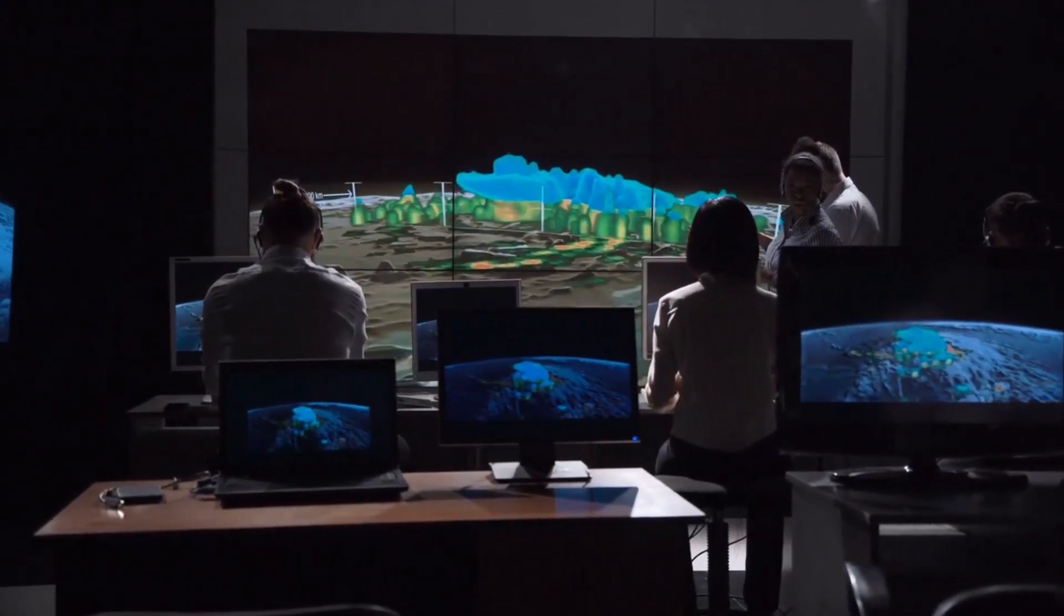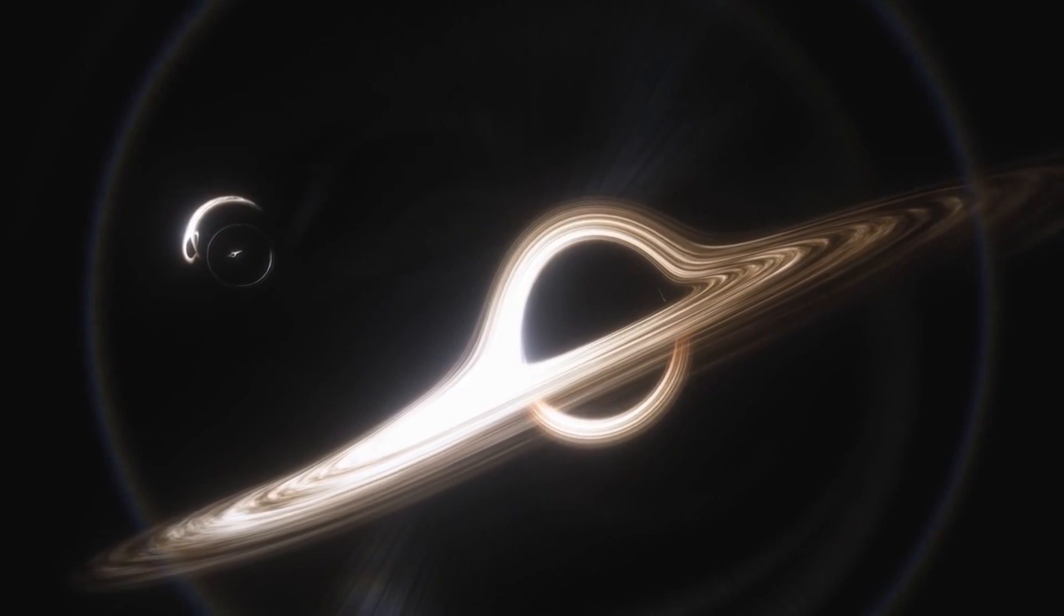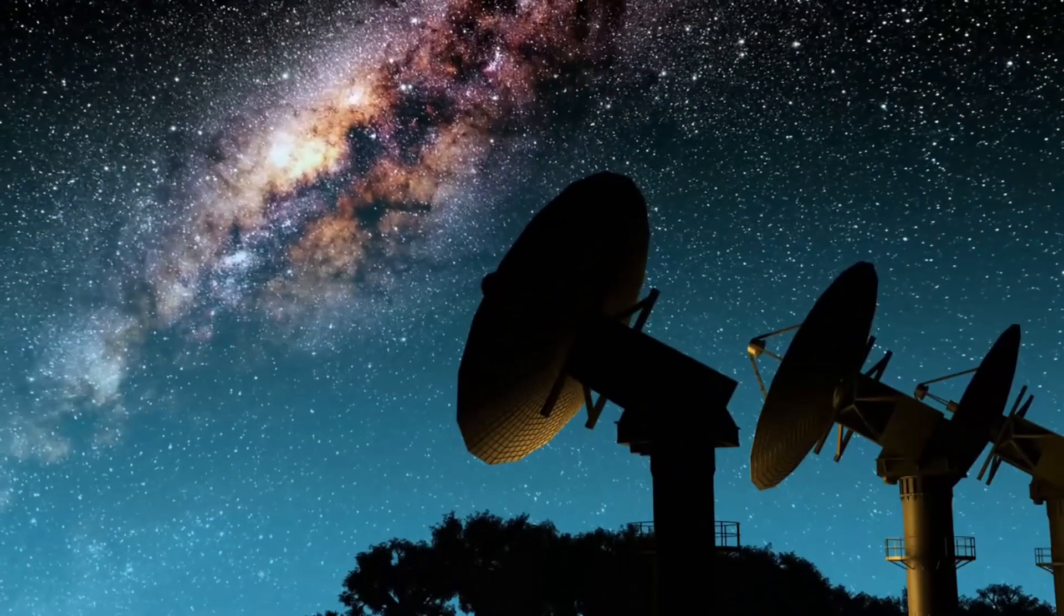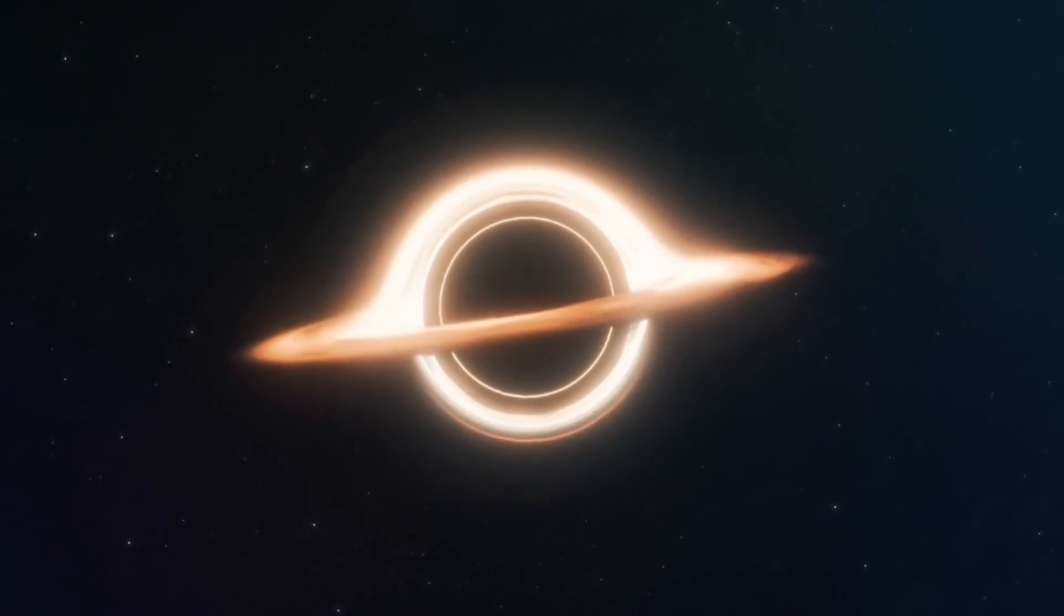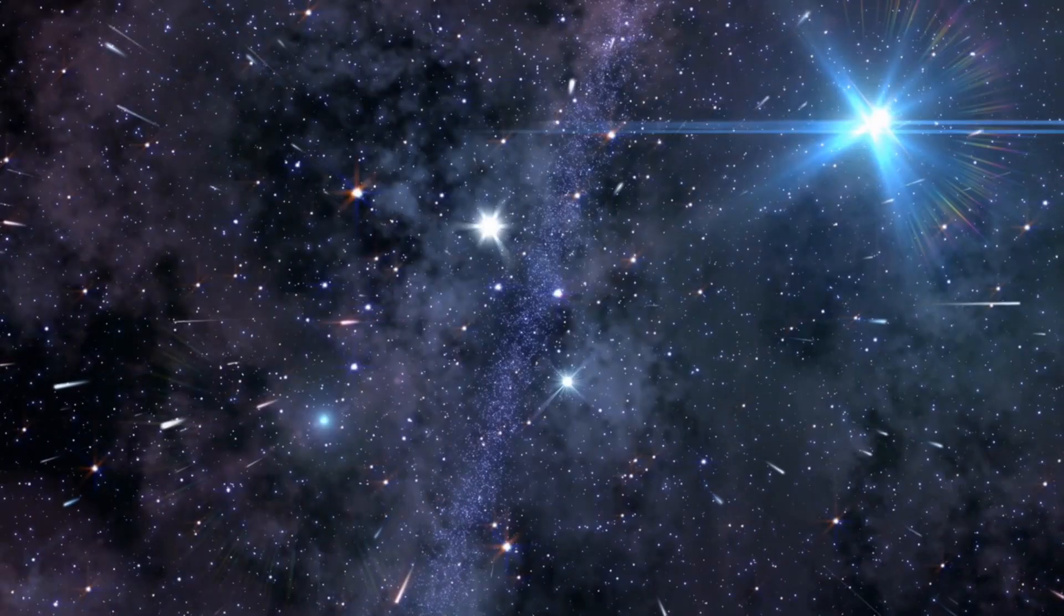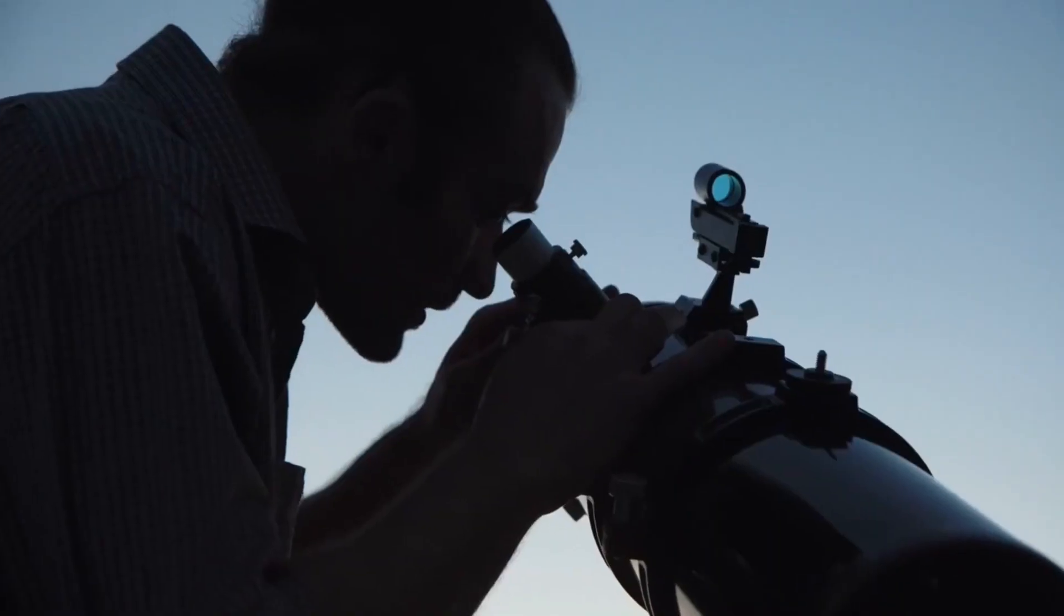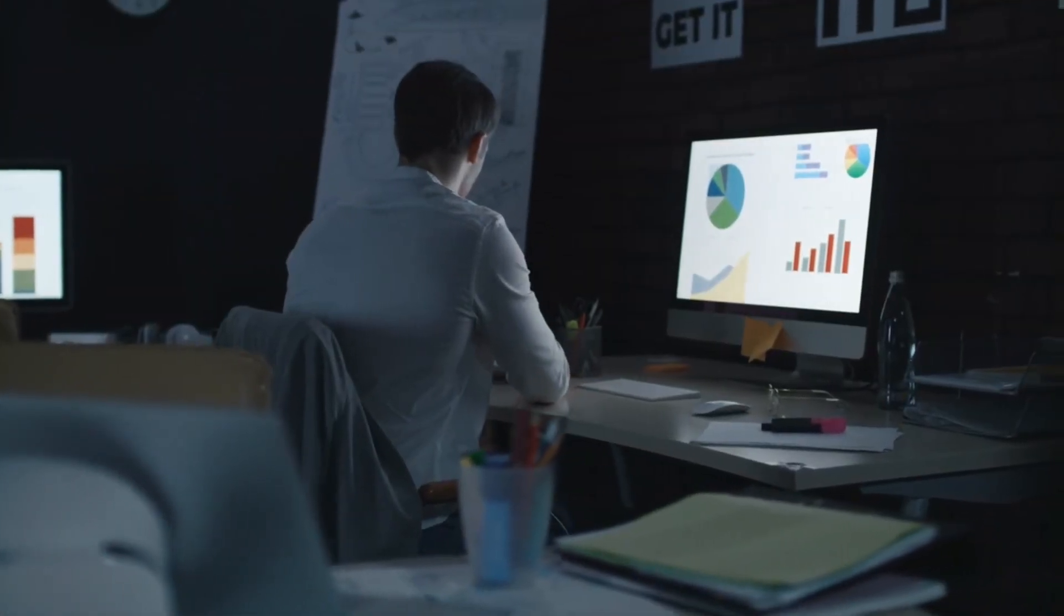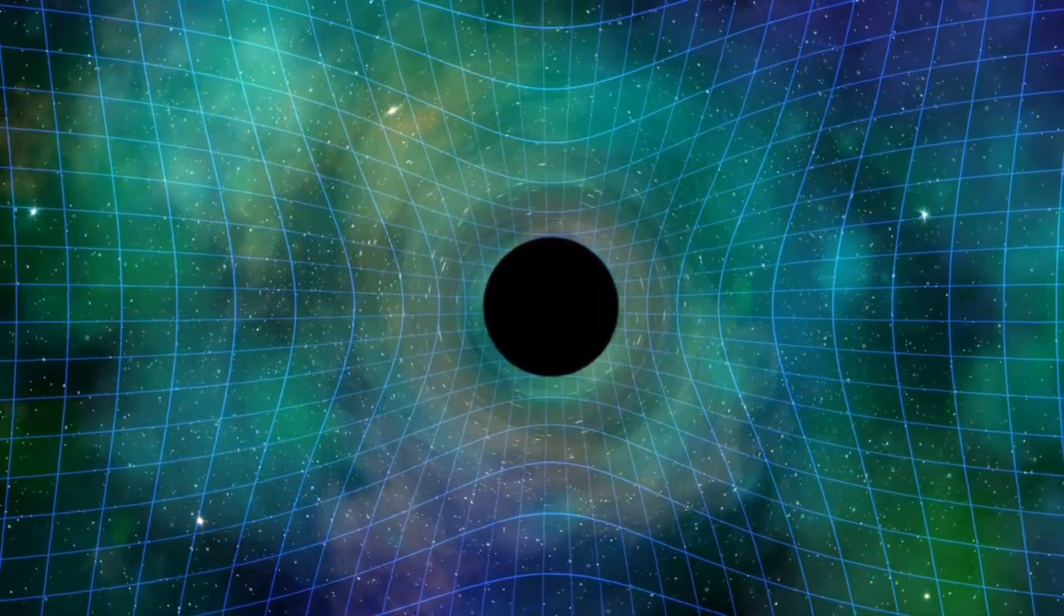dark matter is thought to make up about 85% of the total mass of the universe. Scientists believe that dark matter may be made up of some type of undiscovered particle, but so far, they have not been able to detect it directly. The search for dark matter is an active area of research in astronomy and particle physics, and it involves a wide range of experimental techniques and technologies. One approach to detecting dark matter is to look for its gravitational effects on visible matter, such as stars and galaxies. Another approach is to search for the collisional effects of dark matter particles, which could potentially be detected through the use of specialized detectors. The nature of dark matter is currently unknown, and it is possible that it could be composed of a yet-to-be-discovered type of particle or other exotic form of matter.